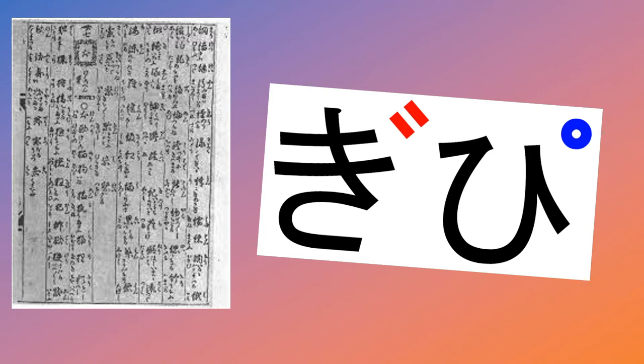For example, from ka to ga, or hi to bi. Hakuten specifically was created by the Portuguese Jesuit missionaries in the 16th century. It was first used in a kanji dictionary published by these Jesuit priests in Amakusa.